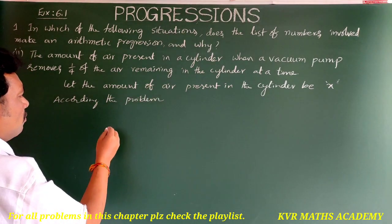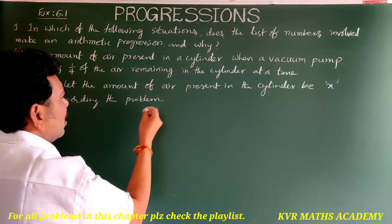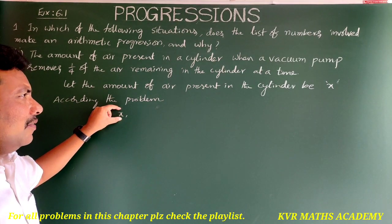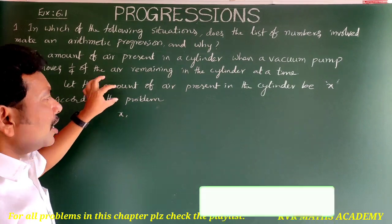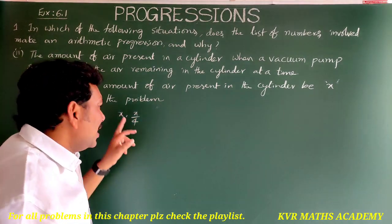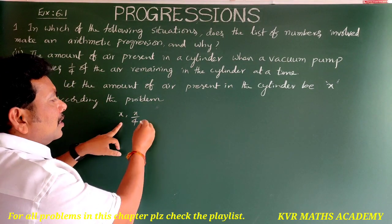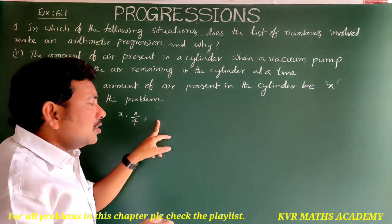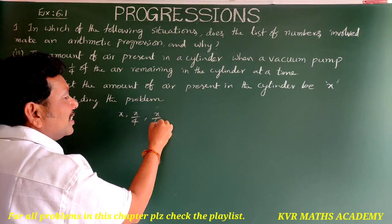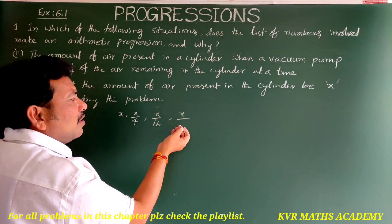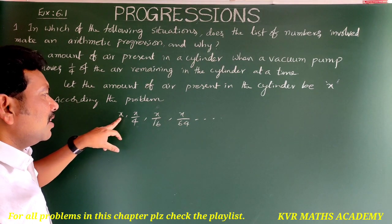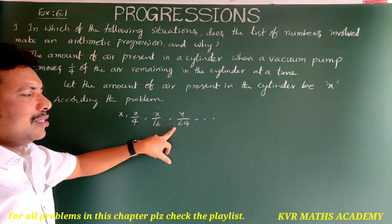According to the problem, the sequence is: first the air is x; then it removes one-fourth of x, leaving x/4; then removes one-fourth of that, giving x/16; then x/64, and so on. So the sequence is x, x/4, x/16, x/64.